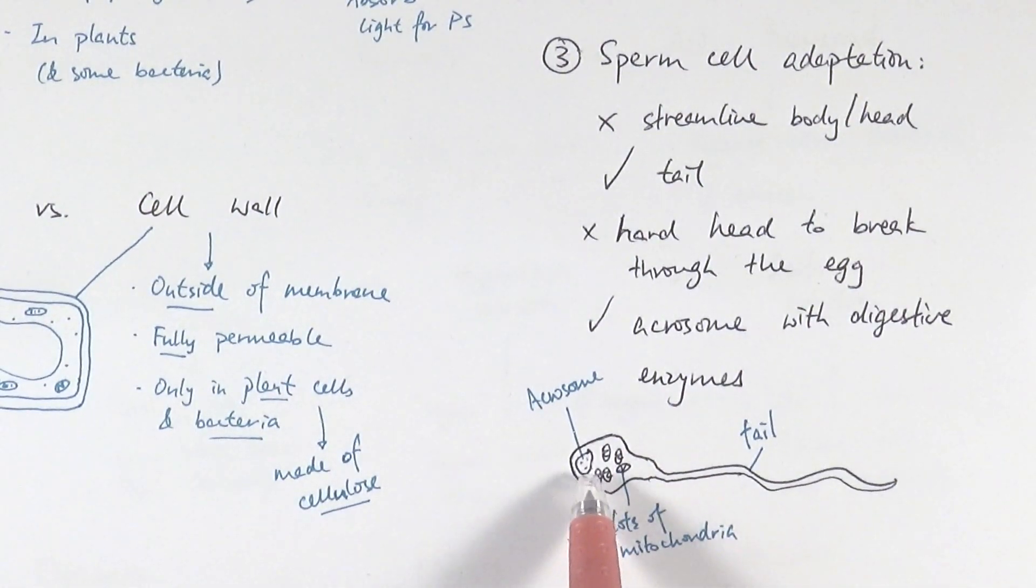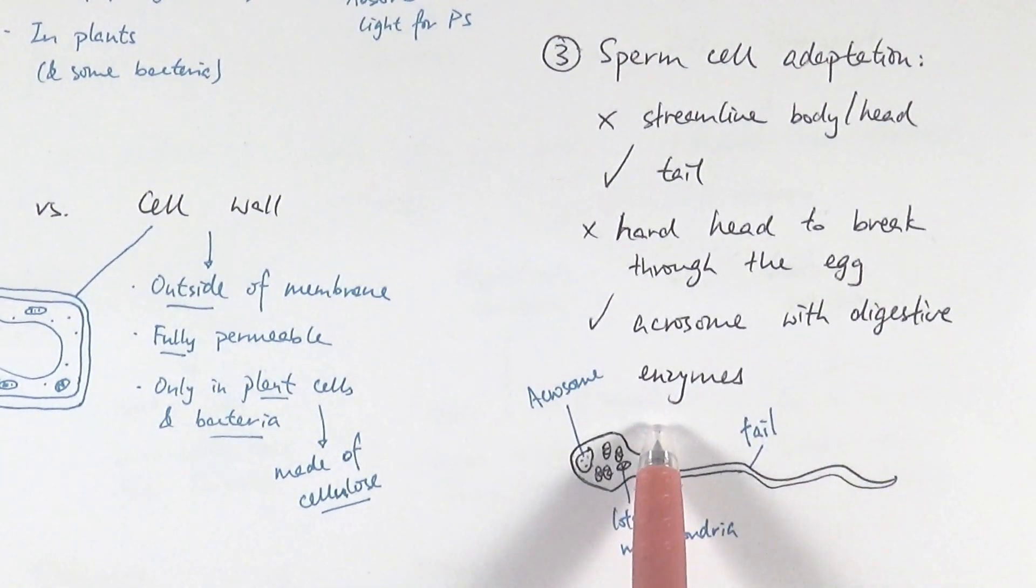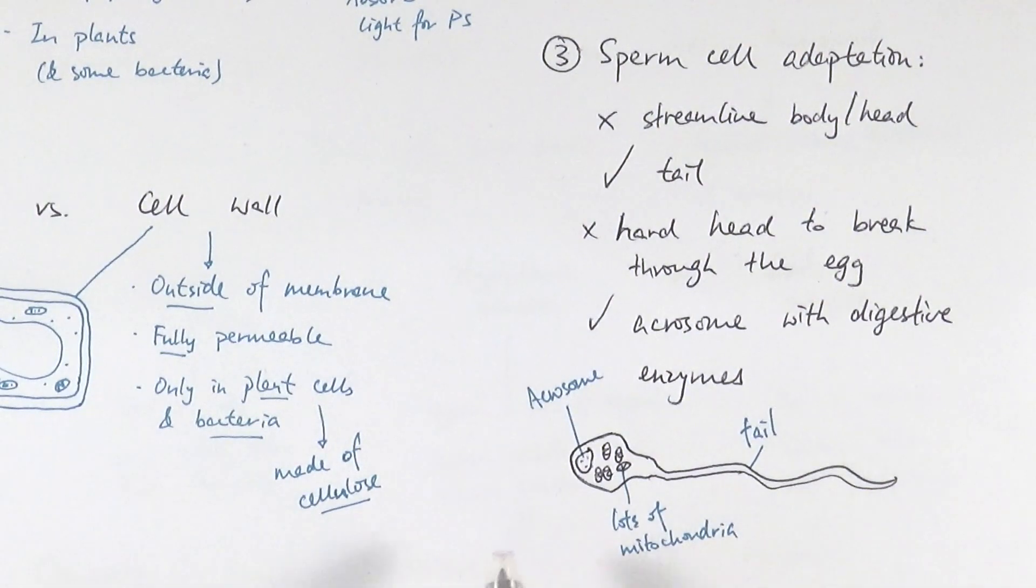But instead the way that they can do it is because they have an acrosome, which is a little pouch in the head of the sperm that contains digestive enzymes. So what happens is when the sperm gets to the egg it will release these digestive enzymes from the acrosome onto the surface of the egg, and then those digestive enzymes will break down the surface of the egg cell.